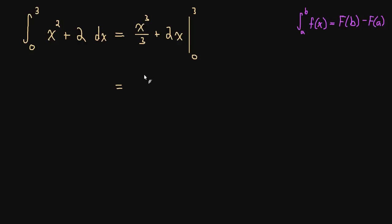So we're going to plug in 3. So this is going to be 3 cubed over 3 plus 2 times 3. So that's what happens when we plug in 3 minus what happens when we plug in 0. So this is 0 cubed over 3 plus 2 times 0. Okay, well, 0 over 3 is 0. 2 times 0 is 0. So that just goes away.